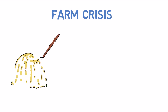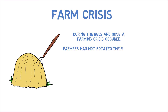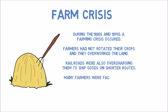Farm Crisis. During the 1880s and 1890s, a farming crisis occurred. Farmers had not rotated their crops and they overworked the land. Railroads were also overcharging them to ship goods on shorter routes. Many farmers were faced with debt and began to support the Populist Party.